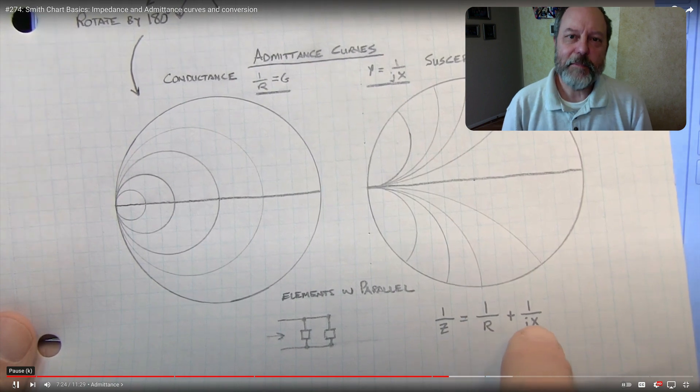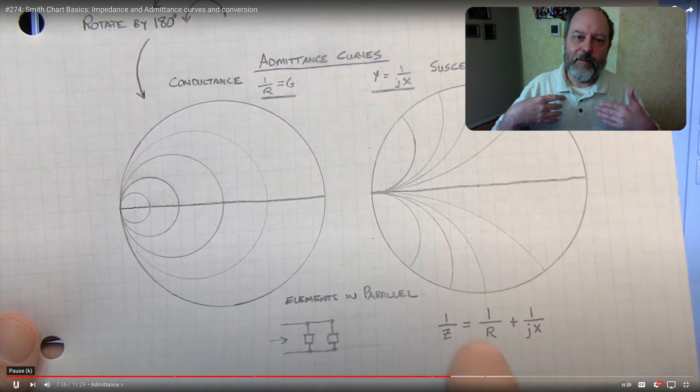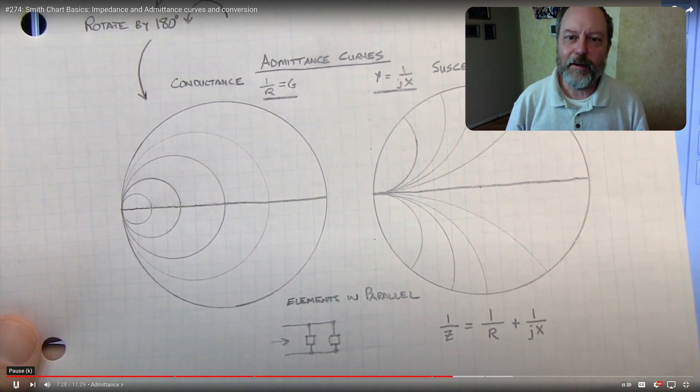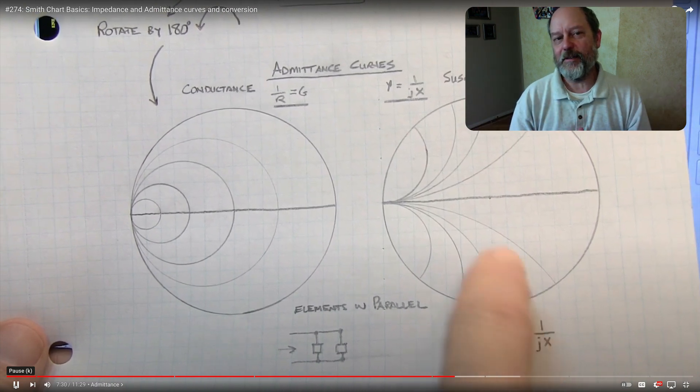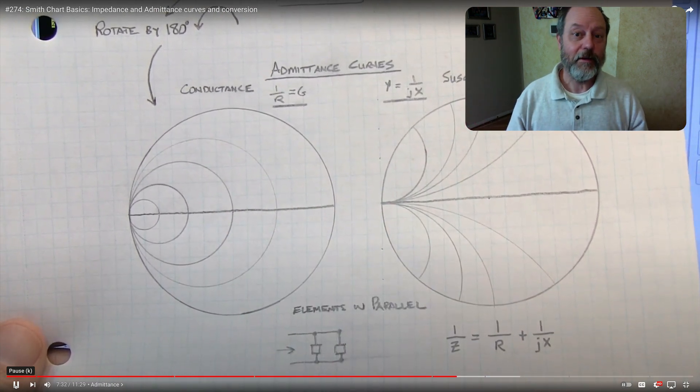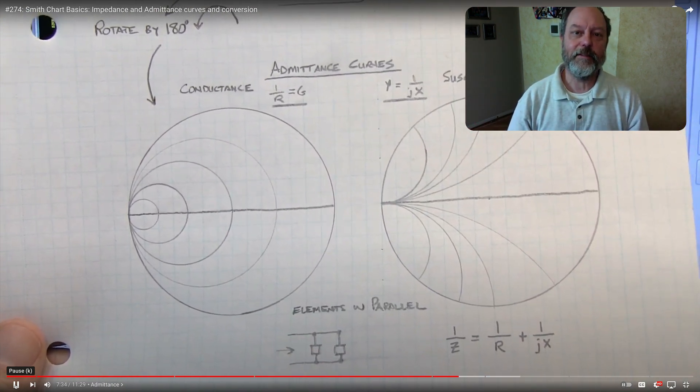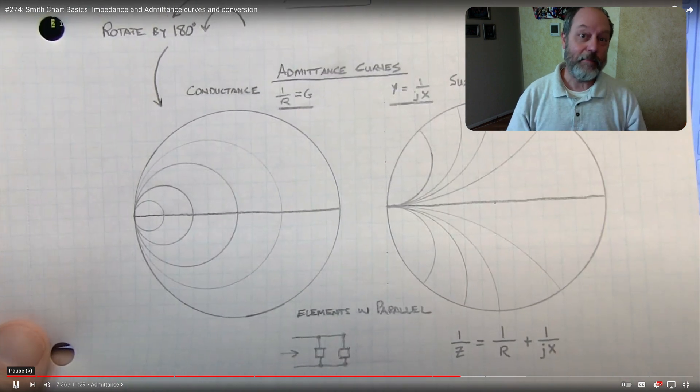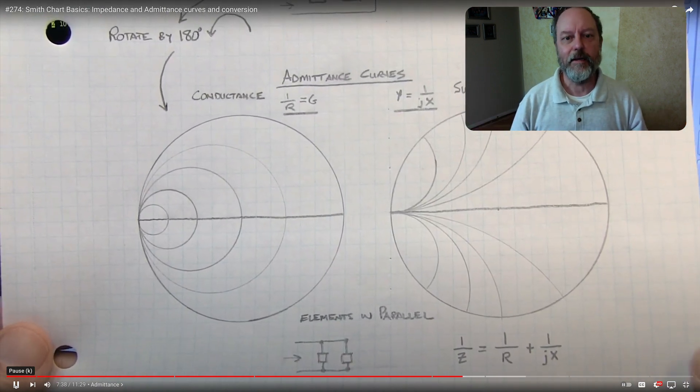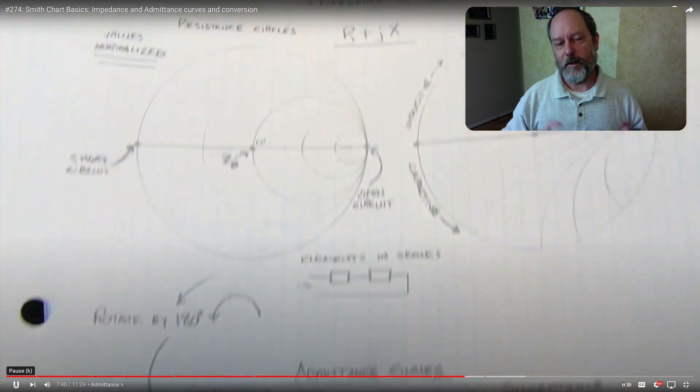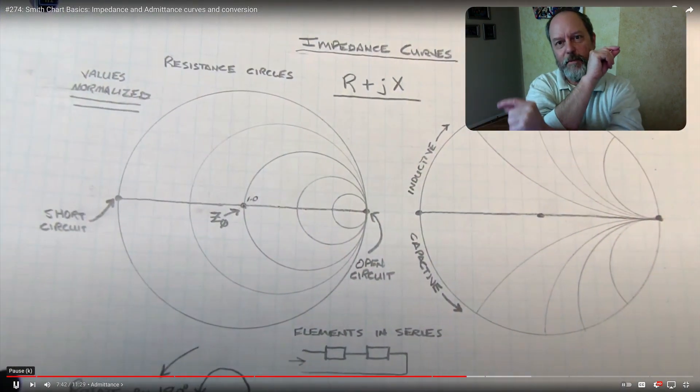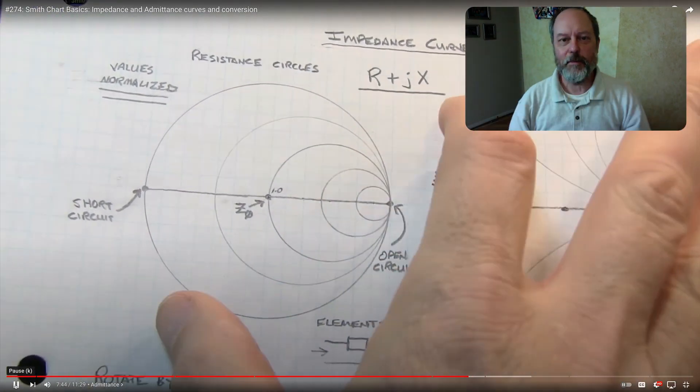So in the previous demonstration that Alan was showing, it involved a series equivalent circuit. But next, as Alan shows, if you want to work with a parallel or a shunt circuit, sometimes it's desirable to work in terms of admittance instead of impedance. And in Alan's video, he shows you can flip the Smith chart 180 degrees to get to an admittance view.